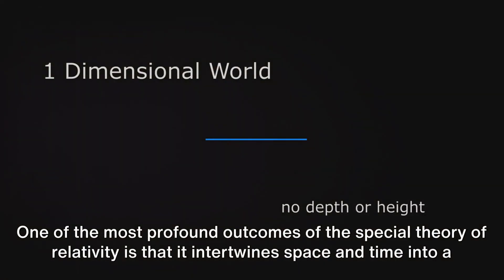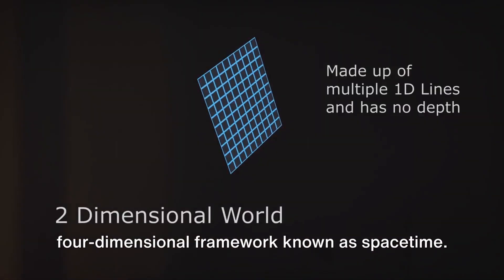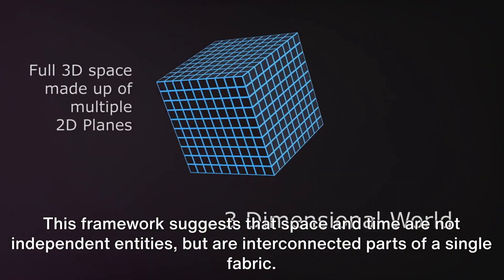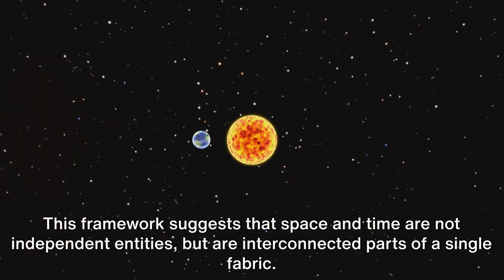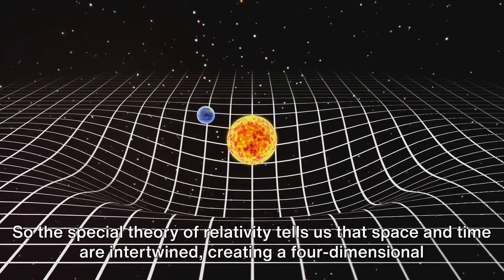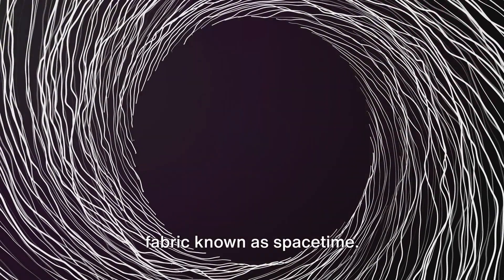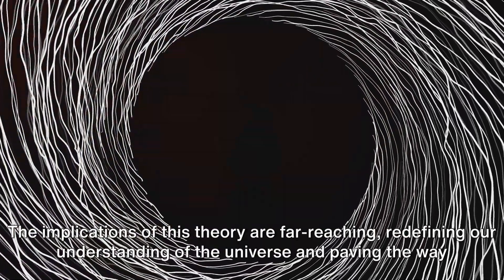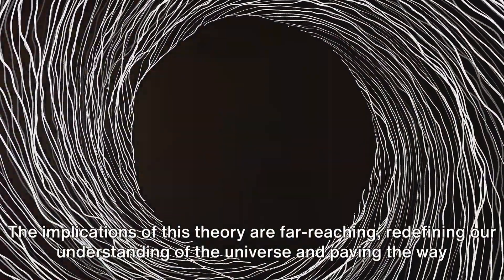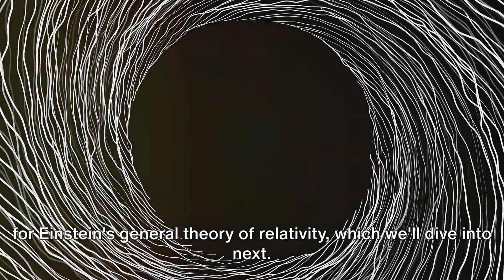One of the most profound outcomes of the Special Theory of Relativity is that it intertwines space and time into a four-dimensional framework known as space-time. This framework suggests that space and time are not independent entities, but are interconnected parts of a single fabric. The implications of this theory are far-reaching, redefining our understanding of the universe and paving the way for Einstein's General Theory of Relativity.